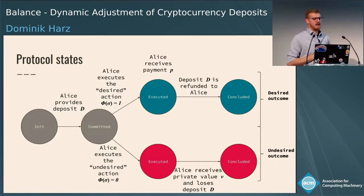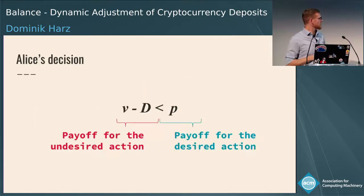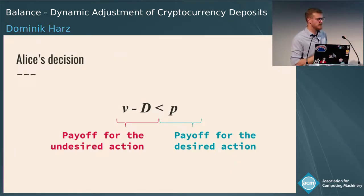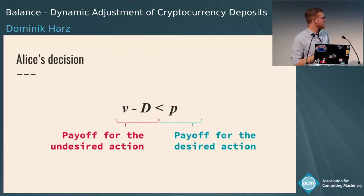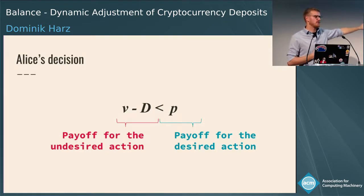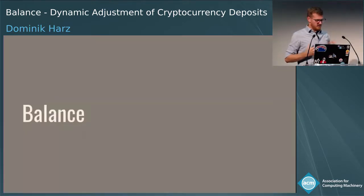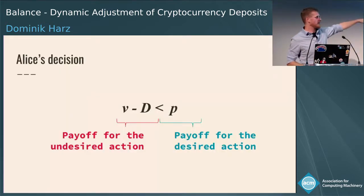Alice makes her decision based on the incentives on both sides. If the private value V minus the deposit gives Alice more payoff than the payment she receives for honest behavior, she will choose the undesired outcome. The condition that must hold for Alice to behave honestly — correlating with the definition of a rational adversary — is that the payoff for the honest action must be higher than the dishonest one. This is the basis from which Balance works to lower deposit D while preserving security.